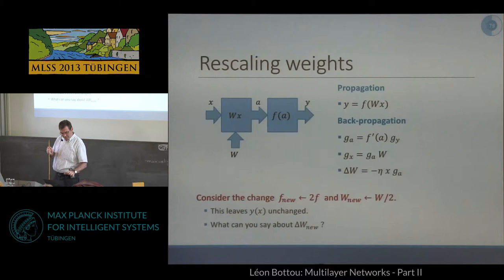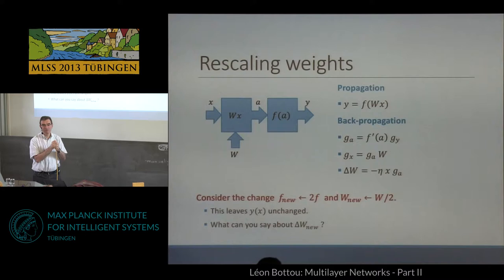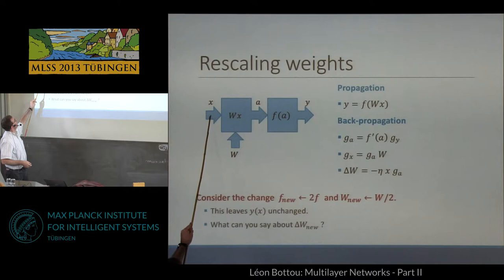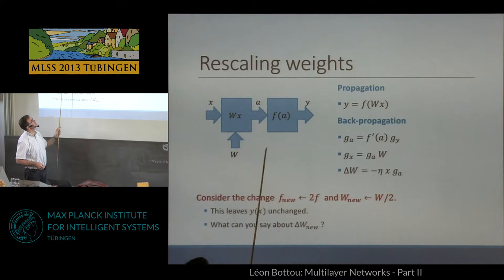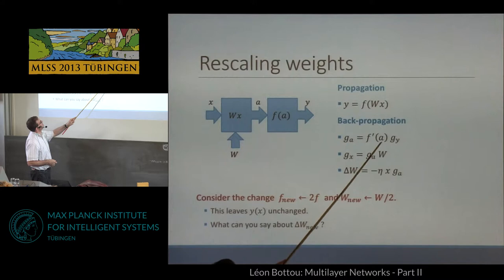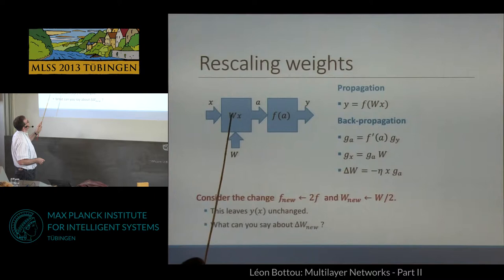Now let's look at our little neurons again and something that could be surprising. I have a linear transform, an X vector, a matrix. I get a column vector of activations and go through some non-linear function component-wise to get my output. You have the rules of propagation and backpropagation: the derivative with respect to A is the derivative with respect to Y multiplied by F' of A, and the derivative with respect to X is the derivative with respect to A multiplied by W on the left side.